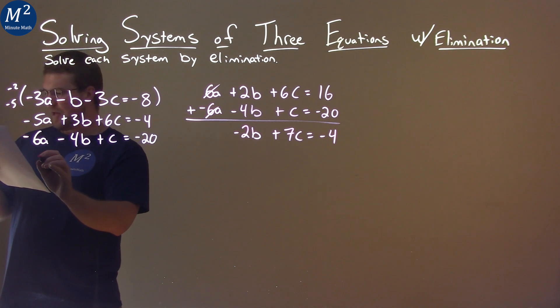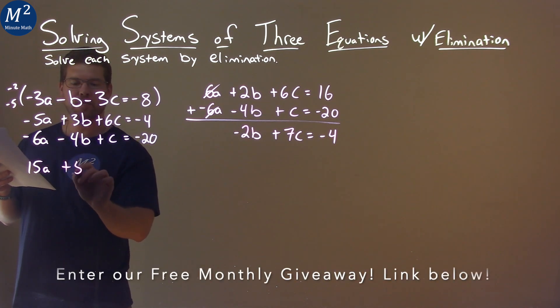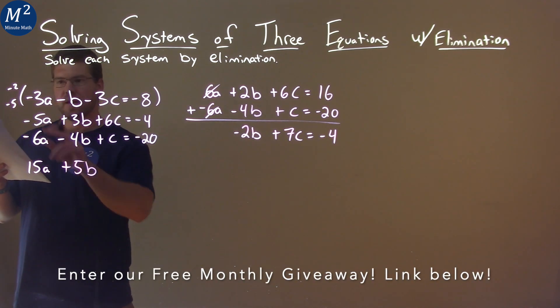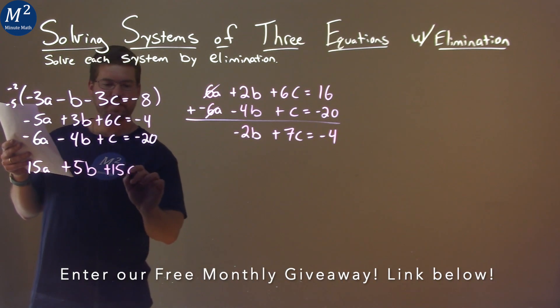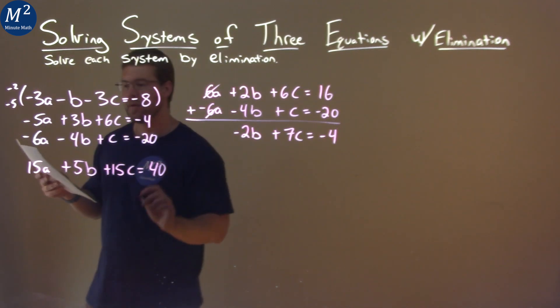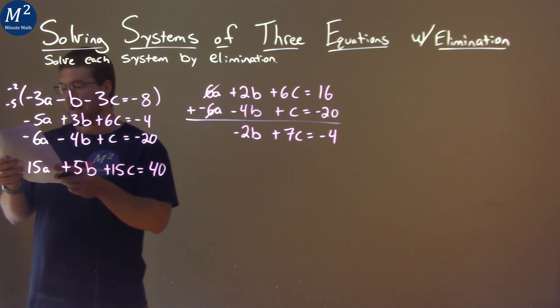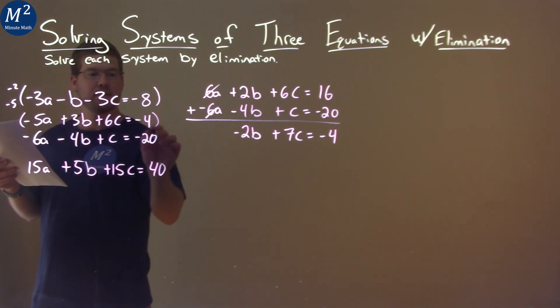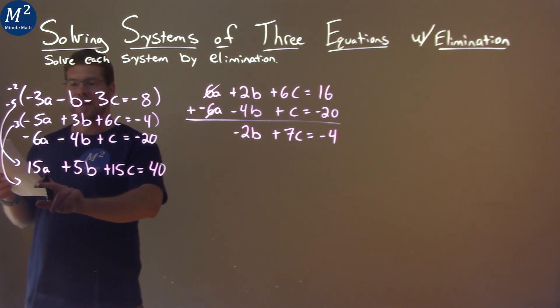Negative 5 times negative 3c is positive 15c, and negative 5 times negative 8 is positive 40. Then if we take the second equation and we multiply that by 3, we'll get negative 15a, and that's going to start cancelling out the a's. So we have negative 15a here.